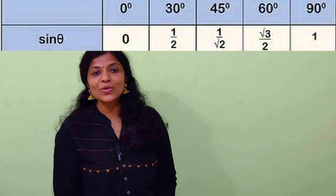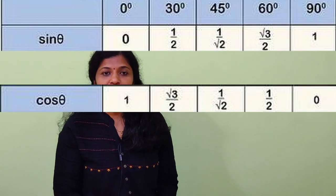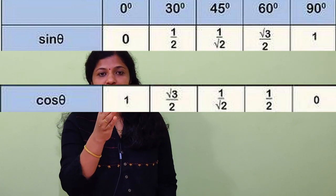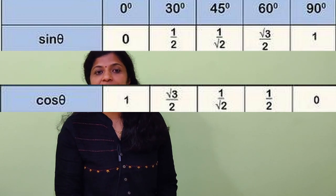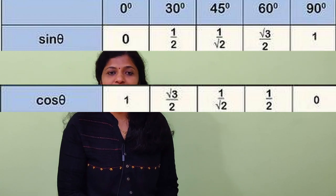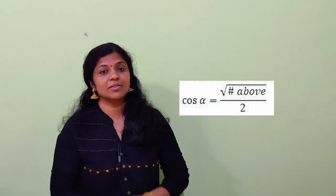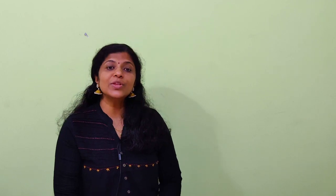For cosine, we write the values we got for sine in reverse order. So: cos 0 = 1, cos 30 = √3/2, cos 45 = 1/√2, cos 60 = 1/2, and cos 90 = 0. As an alternative for cosine, you could count the number of fingers above the angle. Just remember: when you sign a document, you always sign below — so sine uses fingers below.